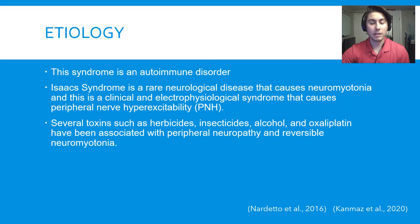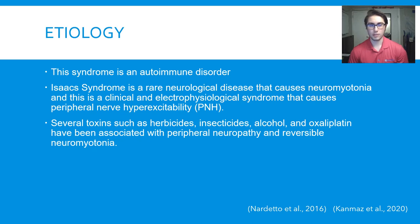Next we're going to talk about etiology. Isaac's syndrome is an autoimmune disorder. This causes neuromyotonia, which is the hyperexcitability of the peripheral nervous system. Currently, the cause of Isaac's syndrome is unknown, but we do know that some toxins such as herbicides, insecticides, alcohol, and oxaliplatin can cause reversible neuromyotonia. Overall, it is not clear what causes the immune system to function like this.